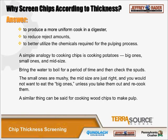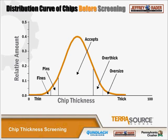This is a pretty typical distribution curve of what a chip sample would look like coming into a screening system. On the left-hand side of the curve you have fines and pins — fines are usually less than 3mm round hole, pins are retained on a 3mm round hole. The accept range is between a 2mm bar opening to an 8mm bar opening. Overthick would be plus 8mm up to 12 or 14mm, and oversized chips are retained on a 45mm round hole.